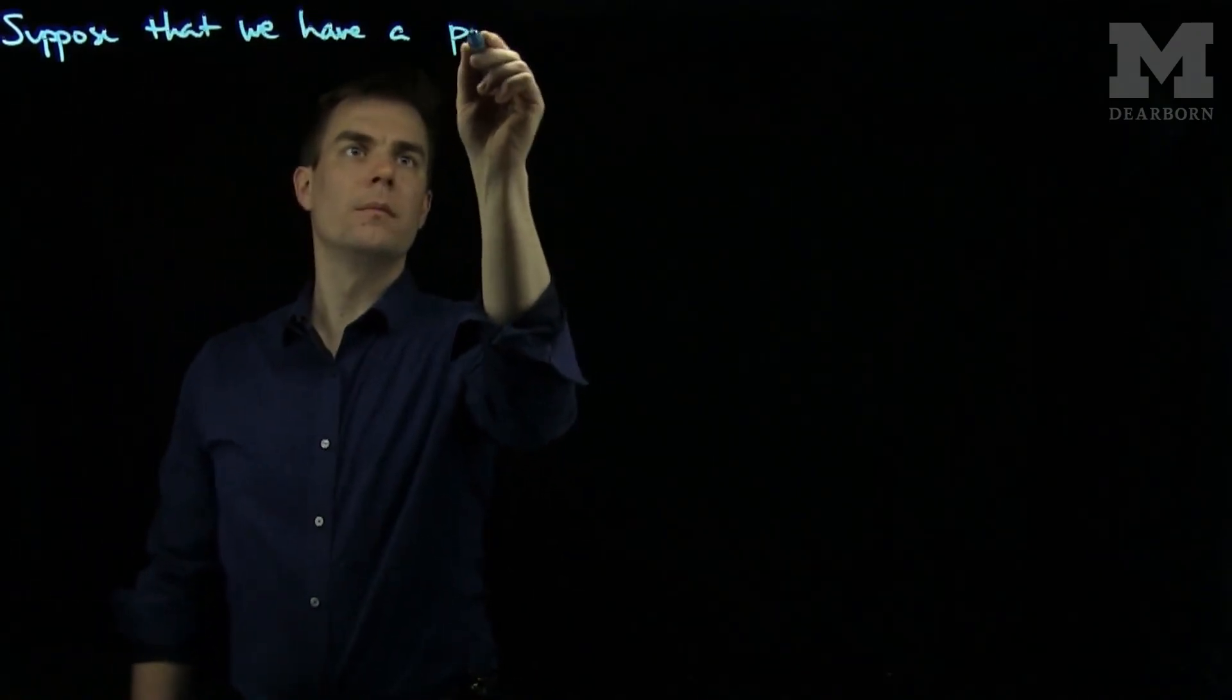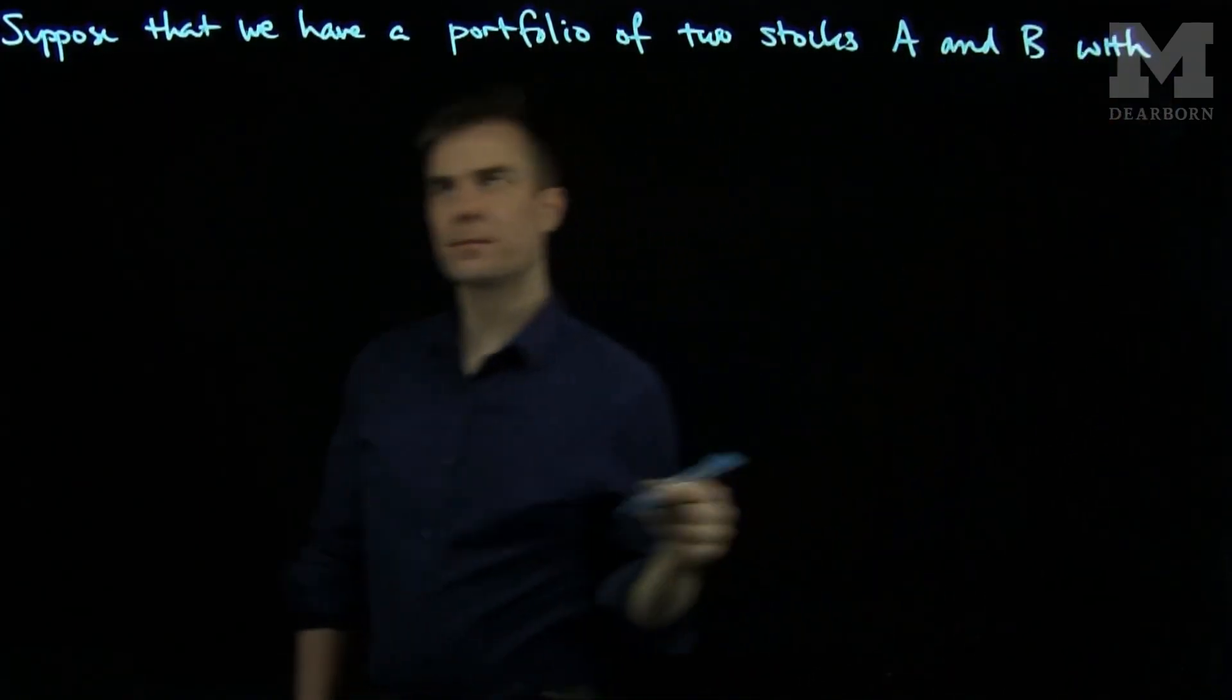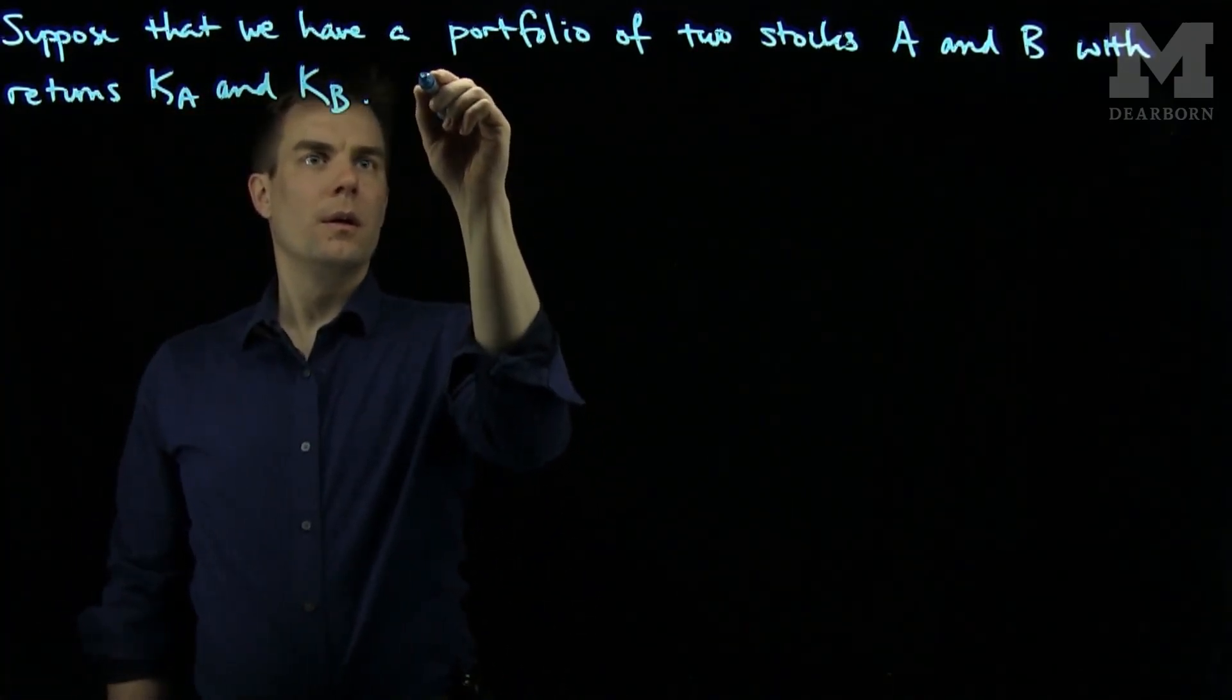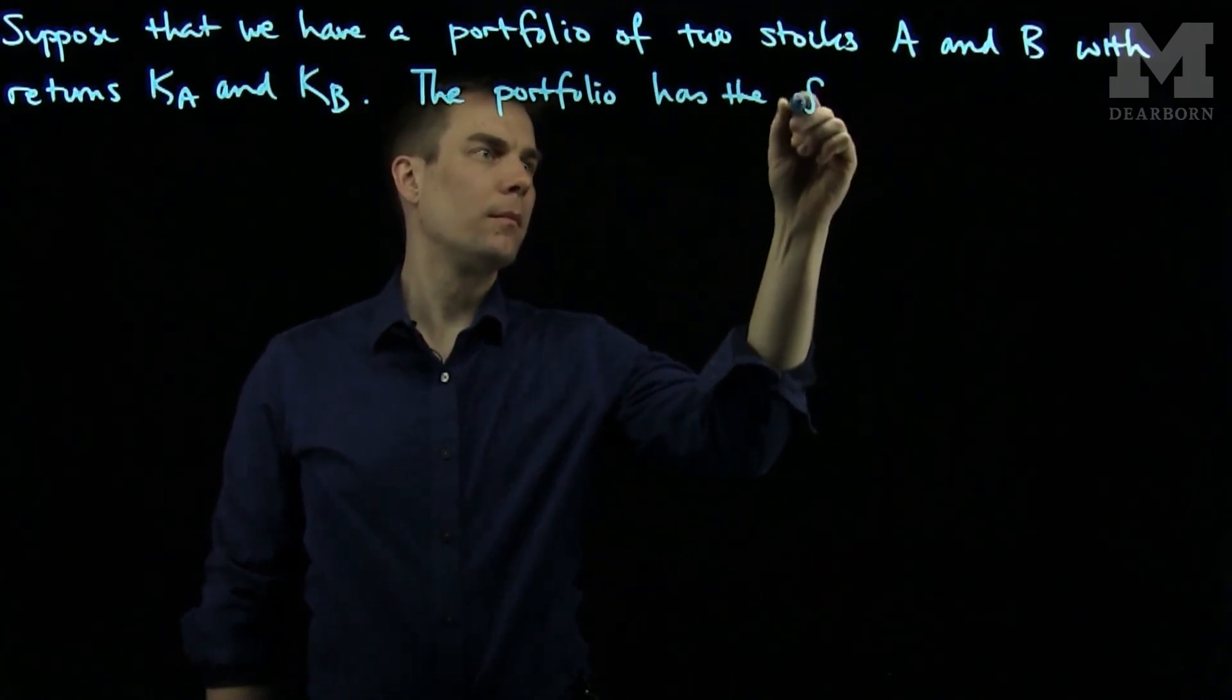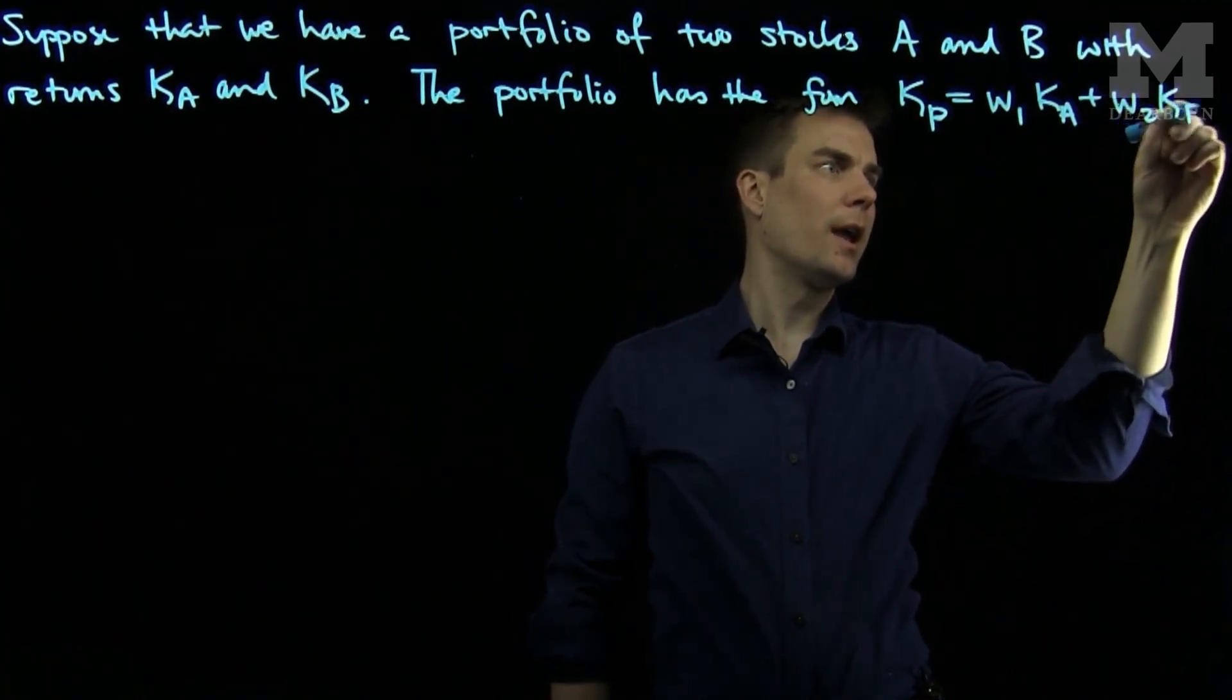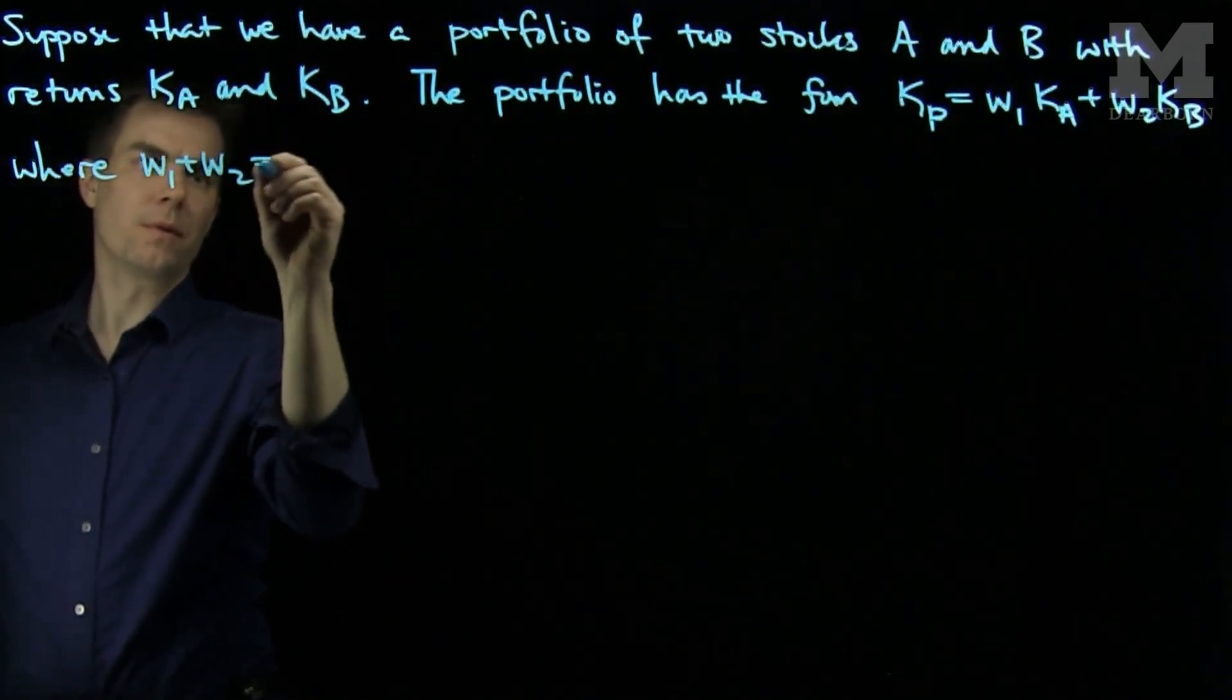Let's suppose that we have a portfolio of two stocks, A and B, with returns Ka and Kb. The portfolio has the form of the return on the portfolio is W1*Ka plus W2*Kb. So the return on the portfolio is a convex combination of the returns on the individual stocks where W1 plus W2 is equal to 1.